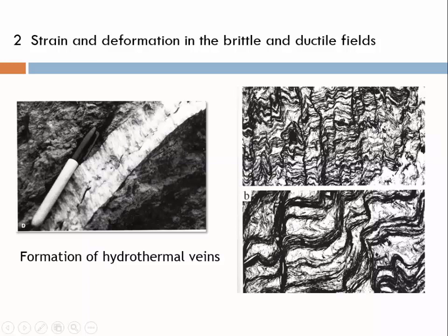Here we see fibrous veins and microscopic views of what we call a granulation cleavage, where undissolvable micaceous material became concentrated and quartz was dissolved. Initially this was a rock with a fairly uniform distribution of mica and quartz. Much of the quartz has been removed, leading to the concentration of mica along these surfaces, and at a later stage these surfaces got folded. This is a granulation cleavage — we will talk about that in more detail later in this course.